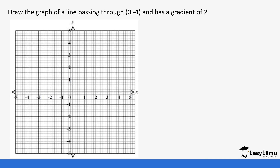For example, if we look at this question, we have been asked to draw a graph of a line passing through a given point and having a gradient of two. We know that to completely draw a straight line we need at least two points, but we only have one point. So we are going to use the gradient to get the equation, and then use the equation to get the other points of the line.